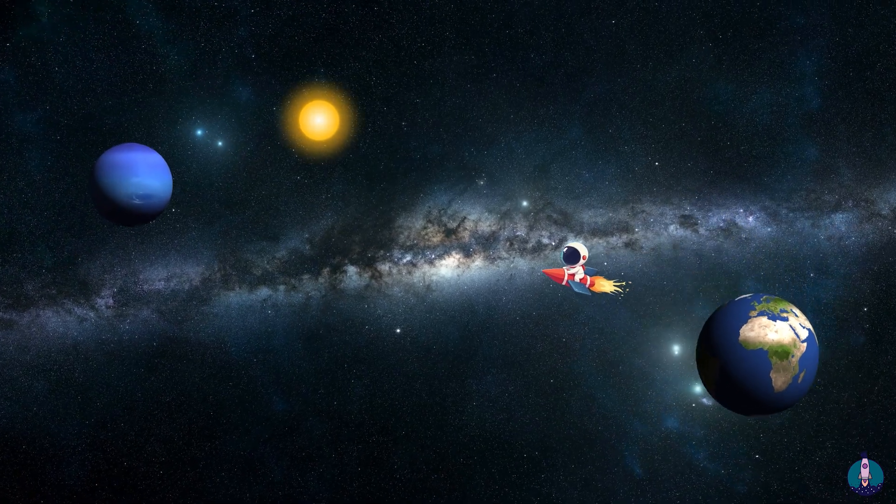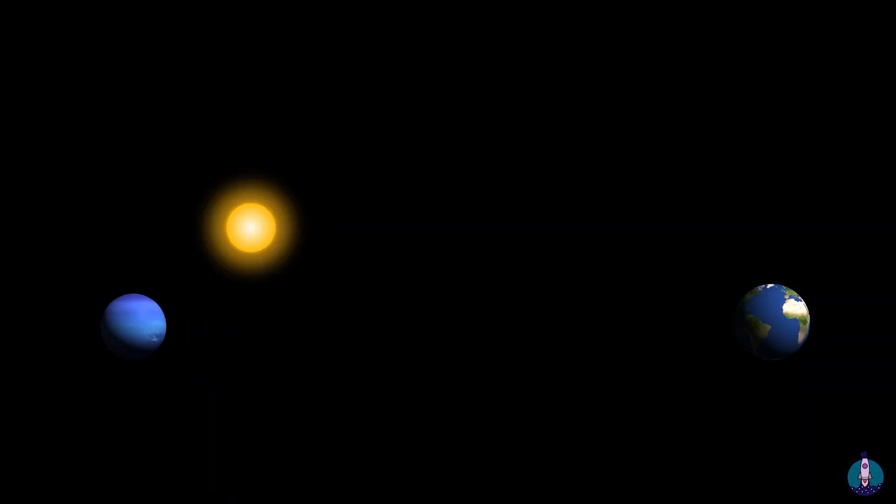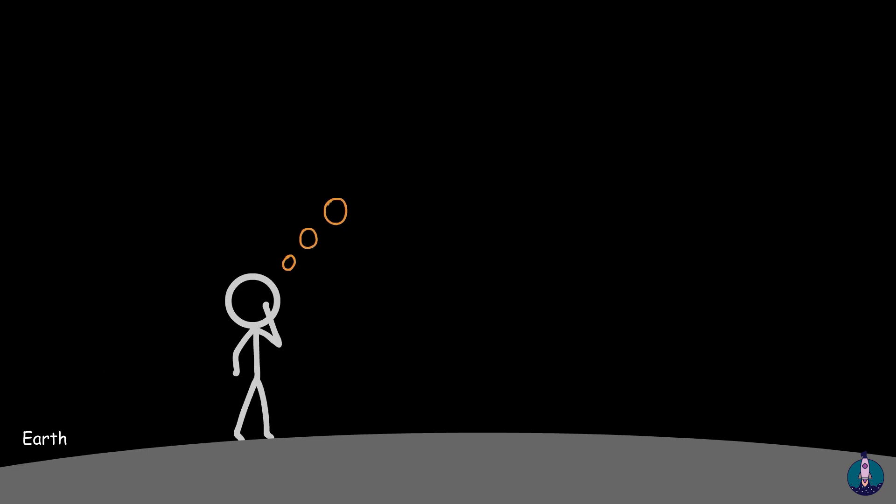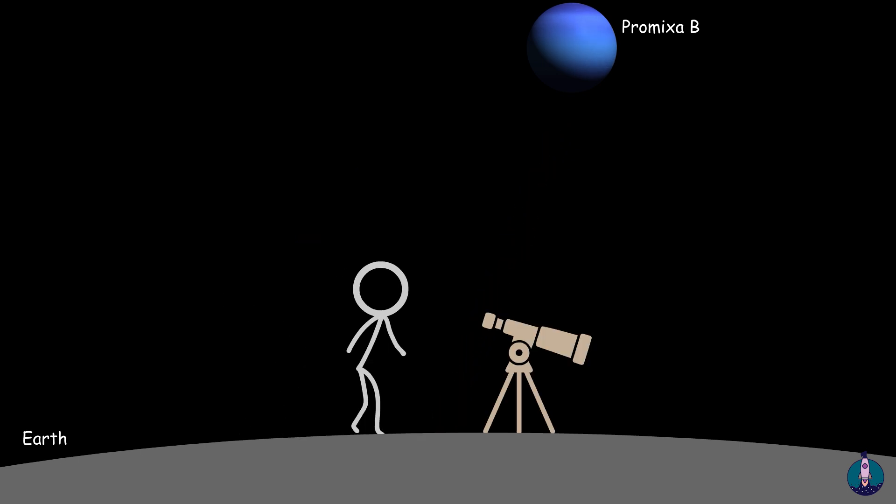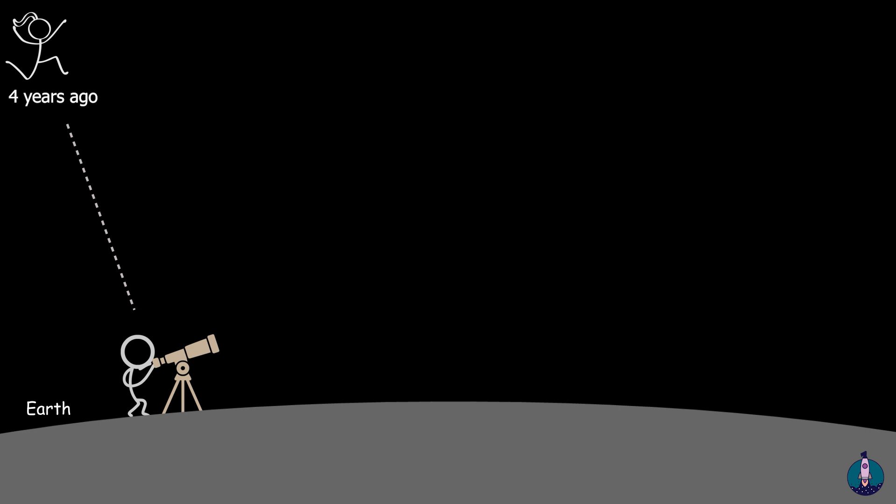Imagine your sister has travelled to Proxima b, a planet orbiting a star about four light years away. You wonder what is she doing right now on Proxima b? Light takes four years to travel from Proxima b to Earth. If you look at her through a telescope, you are only seeing what she was doing four years ago, not what she is doing now.